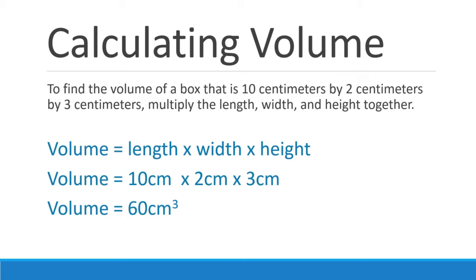Some simple calculations for volume: multiply length times width times height if we're dealing with a box. 10 centimeters times 2 centimeters times 3 centimeters multiplied together gives us 60 centimeters cubed.